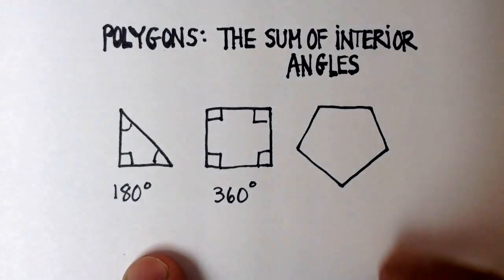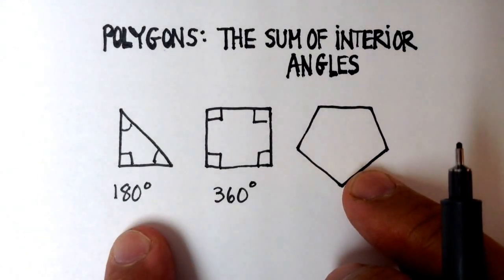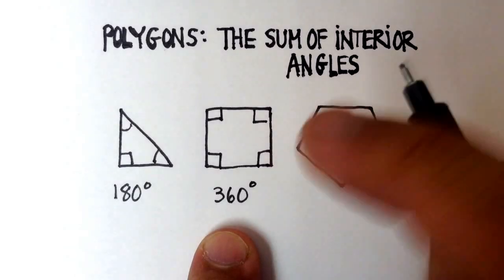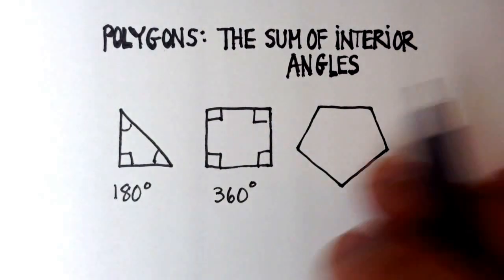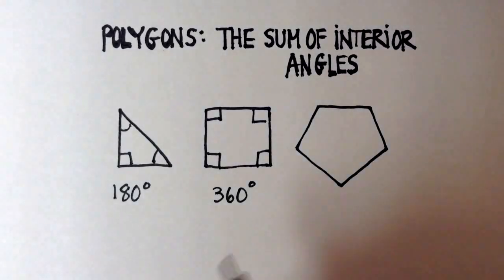But is there a formula to help us determine the sum of interior angles if we have larger numbers of sides, for example, like this pentagon? There actually is.